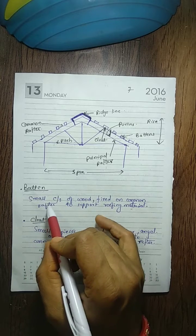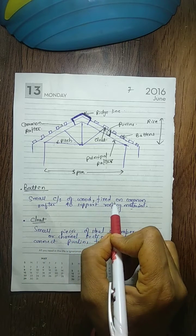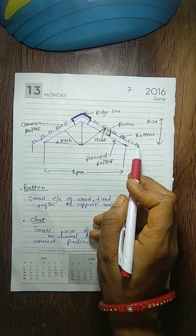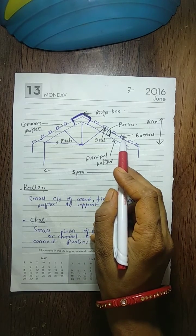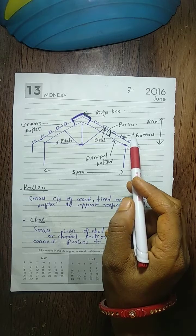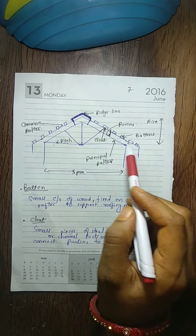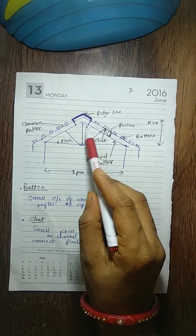Batten means a small cross section of wood fixed on the common rafter to support the roofing material. This is the small wooden material which is batten - a small cross section of wood which should be placed on common rafters to support the roofing material.